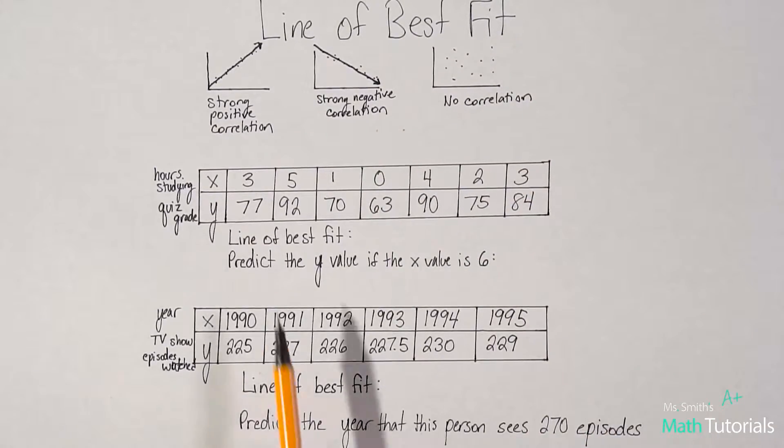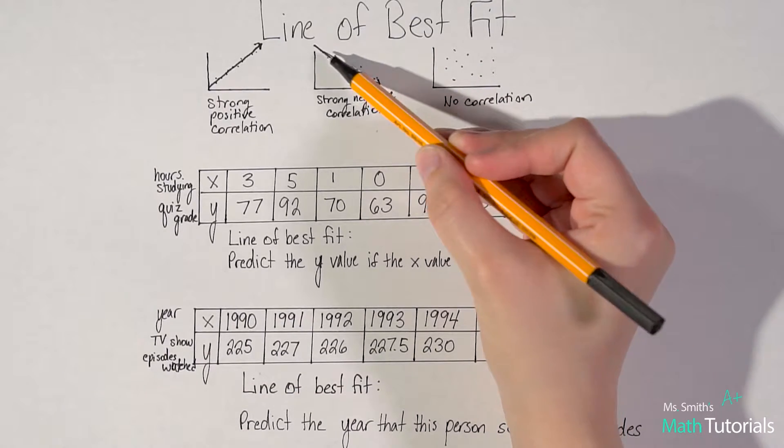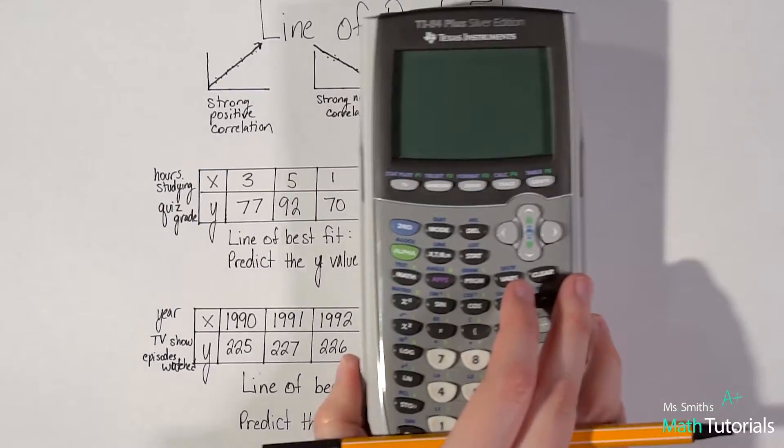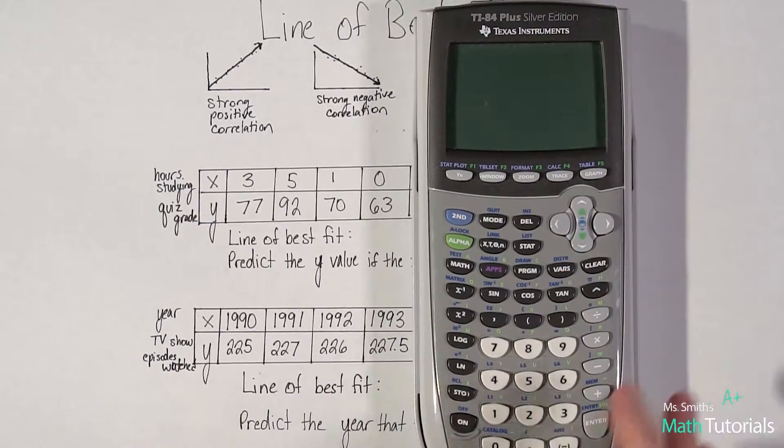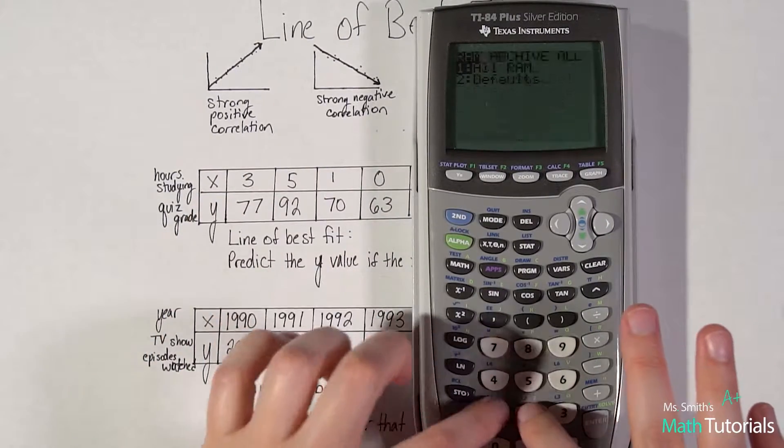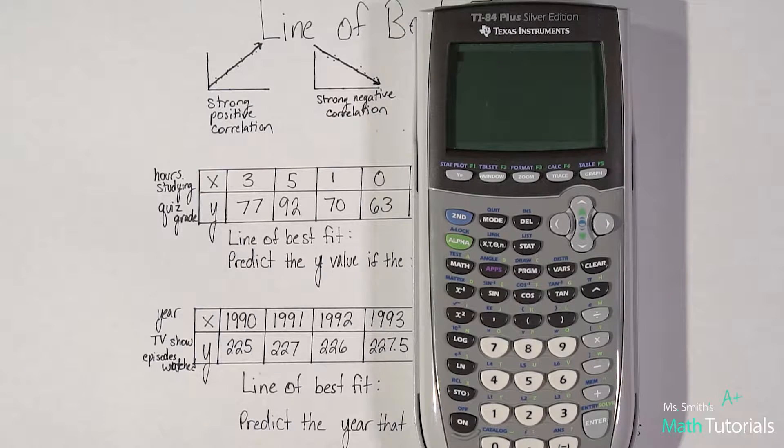How would we figure out what that line would be, that line of best fit? Well, we use the calculator. This is a very calculator heavy lesson, and really a calculator heavy unit as a whole. To do that, it's a good idea to go ahead and clear your calculator, because you might have some lists in there from other stuff you've been doing. Just go ahead and clear it. Second plus 712. Go to your stat, and your edit.